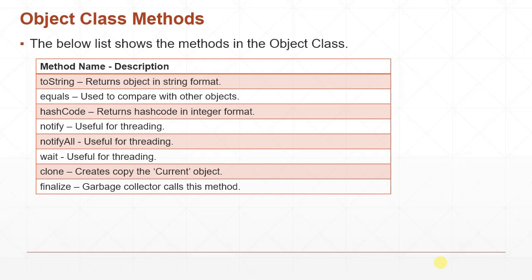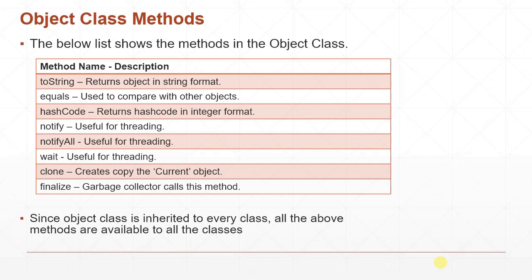The finalize method is useful for cleaning up the object. For example, if you created a connection to a database, connected to a network machine, or allocated other objects in the heap, finalize is useful to perform all cleanup activities. Heap objects will be automatically garbage collected, but finalize is useful to double-check and clear resources like closing file handles or closing database connections. Since Object class is inherited by every class, all these methods are available to all classes. The listed methods are either public or protected.